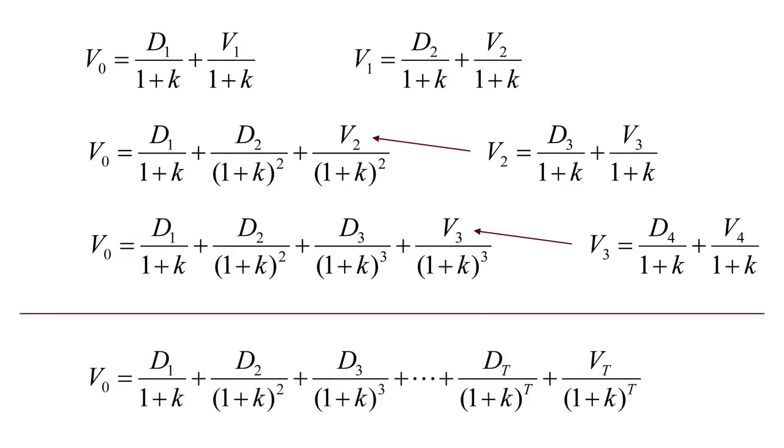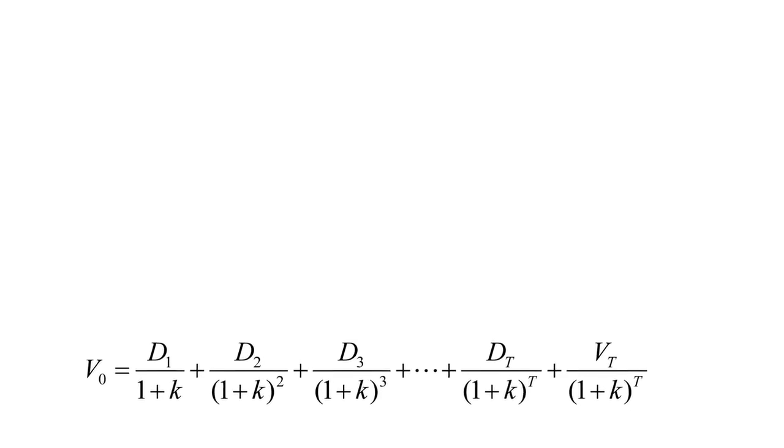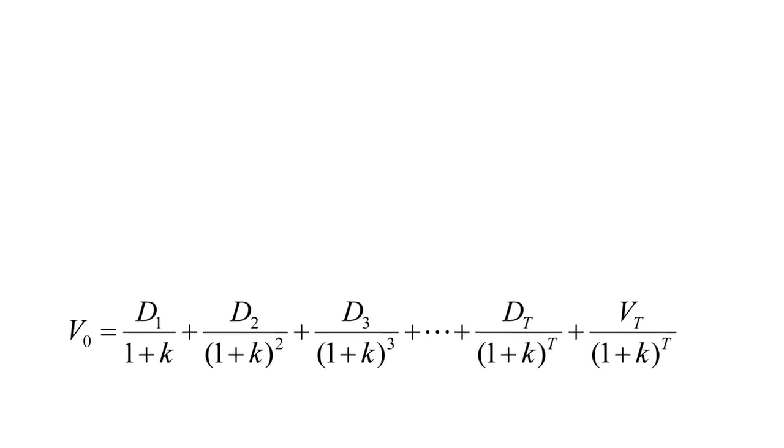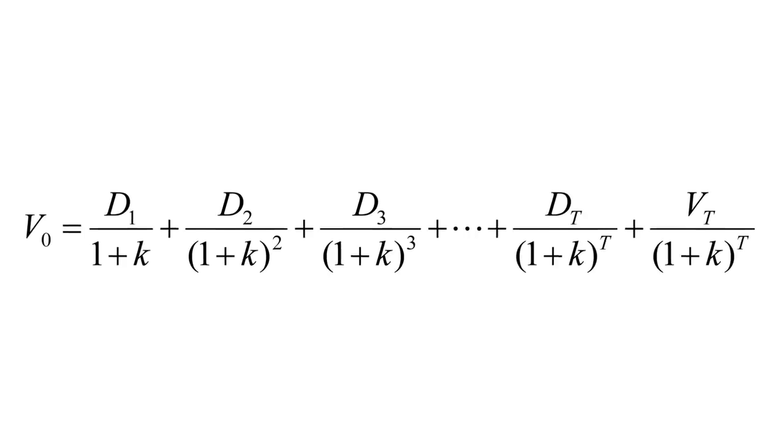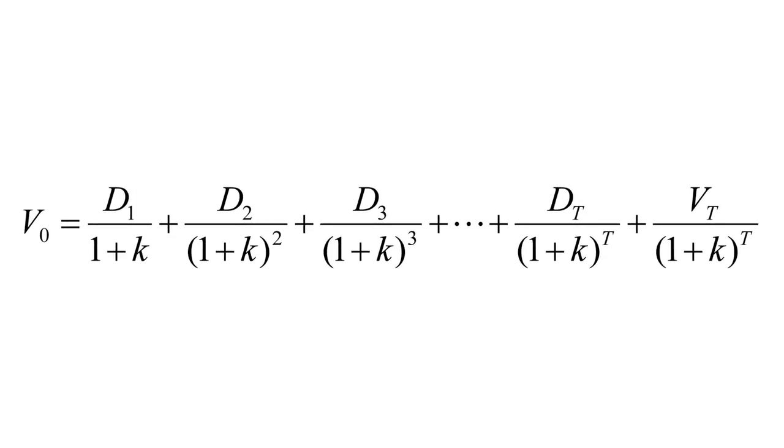So now we see the final version here where we've got the value at time zero, represented by the present value of the dividend at time one, time two, time three, and so on. And we've pushed that selling price out to some arbitrary time, time t.